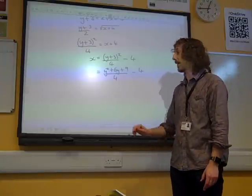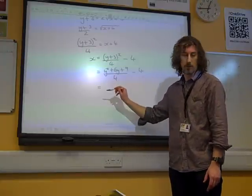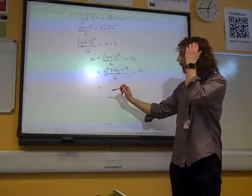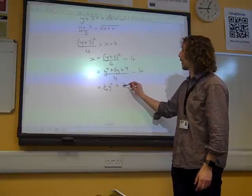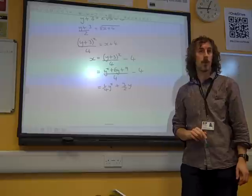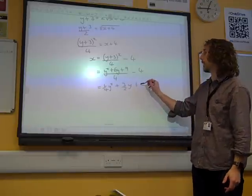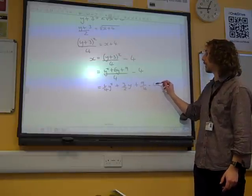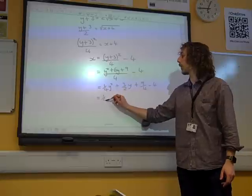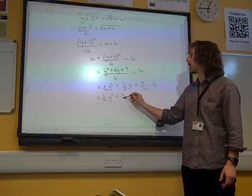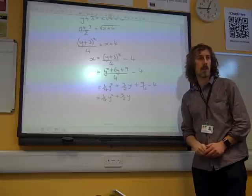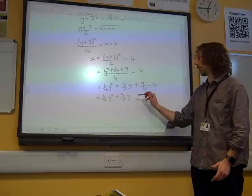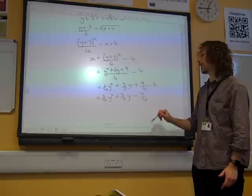If we think about it one term at a time, that's a quarter of y squared plus 1 and a half y. I'll do it in two lines. Plus 9 over 4 minus 4. So that's a quarter y squared plus 3 over 2y. And 9 over 4 take away 4, that's 9 takes 16 quarters. So it's minus 7 over 4.